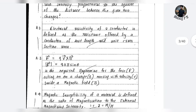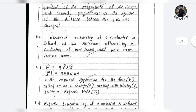Electric resistivity of a conductor is defined as the resistance offered by a conductor of unit length and unit cross-sectional area.